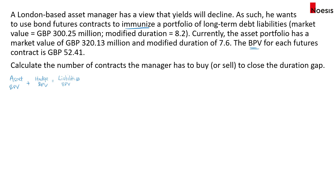We need to find the asset BPV and the liabilities BPV, then determine how many futures contracts are needed to equate the left-hand side to the right-hand side. The asset BPV equals the asset's market value multiplied by the modified duration of the asset, then multiplied by 0.0001, which represents one basis point. Some may prefer to use one over 10,000 — it leads to the same answer.